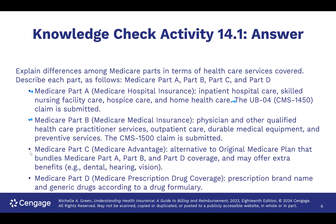Now we get into things that are a little more interesting: Medicare Part C, also known as Medicare Advantage. We used to call this Medicare Risk, Kaiser Senior Advantage, Secure Horizons, and other names. In this case, there are no claim forms. The insurance company receives a capitated payment based on the risk-adjusted value of the enrollee.